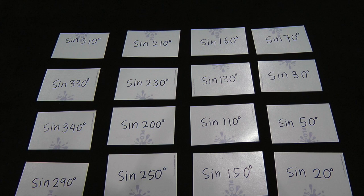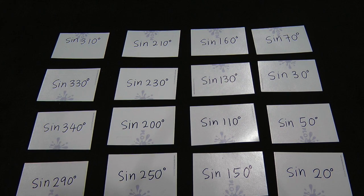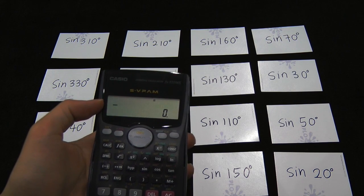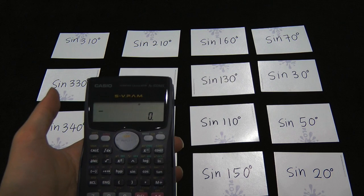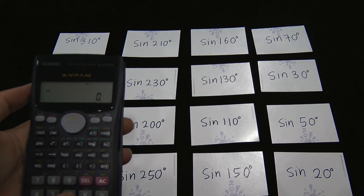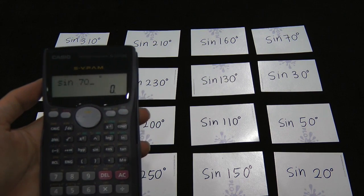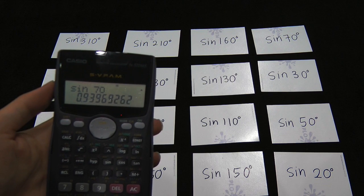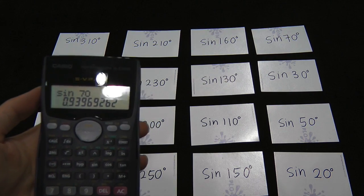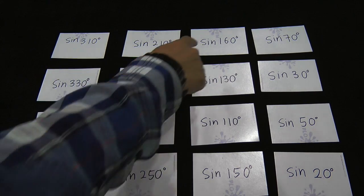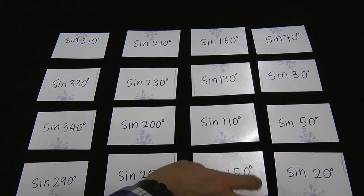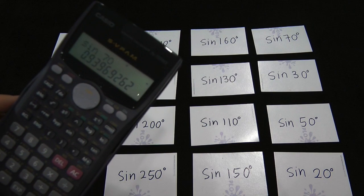First, I want you to find the relationships between the cards — if possible, group them together if you think two cards will give the same value. What you need to do is take out your calculator and press it to find out. For example, if it's sine 70, you press sine 70 and you get 0.934. Then you have to think: in this row, which other card will give me the same value, 0.934?